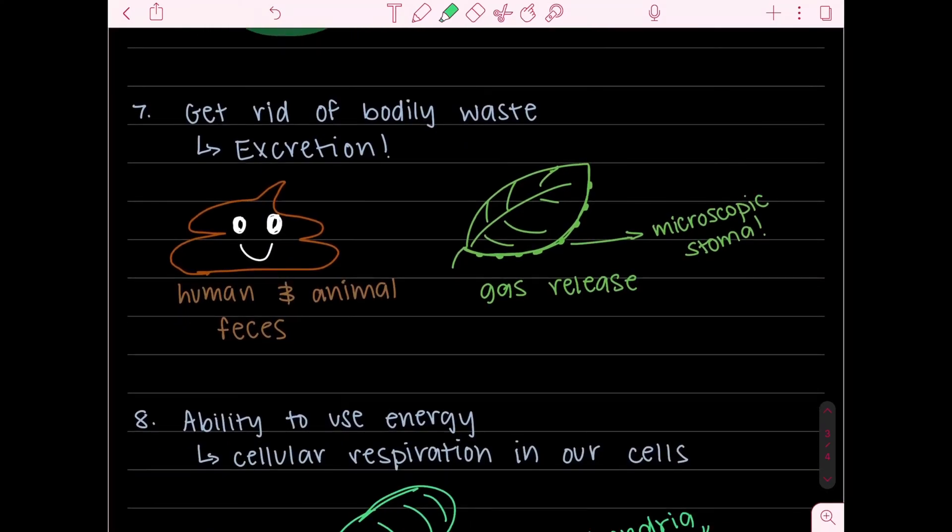The seventh characteristic is that the organism must be able to get rid of bodily waste or any sort of toxins that it doesn't require. This is basically excretion. So the human body actually has the system of excretion and that is how you get rid of all the toxins. For example human feces.